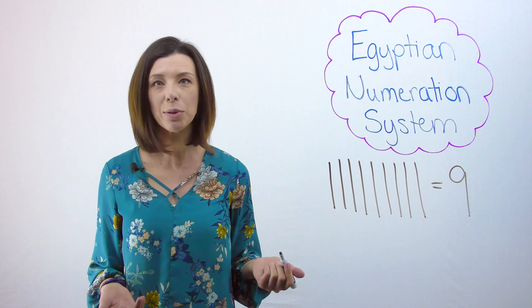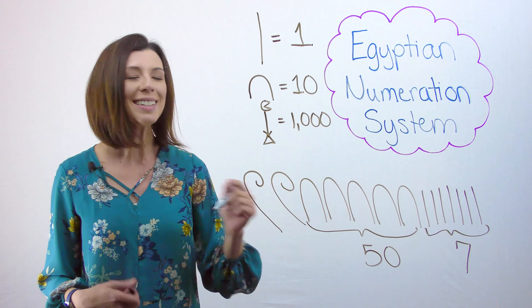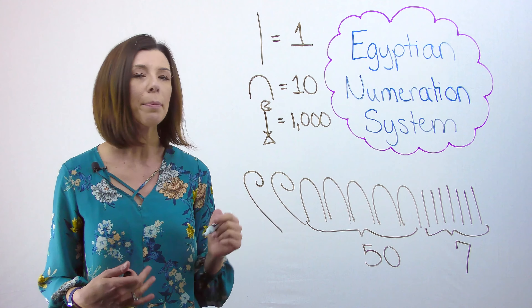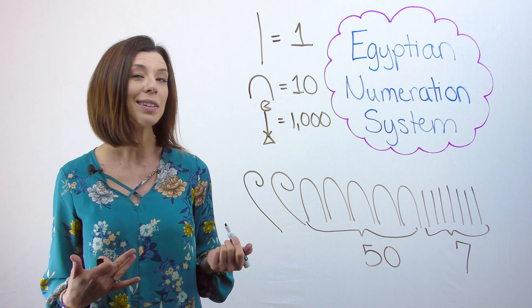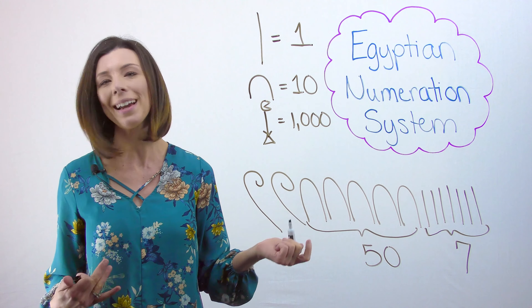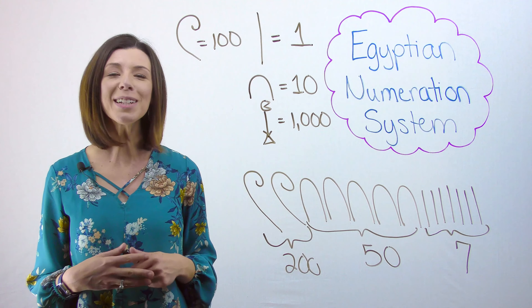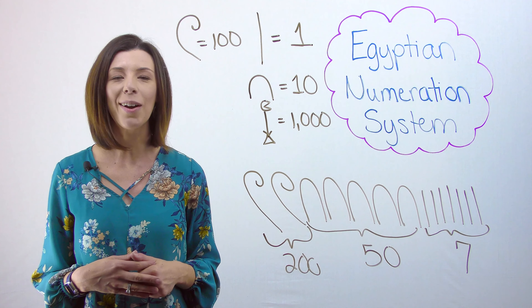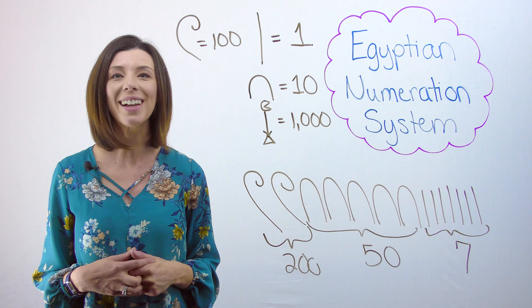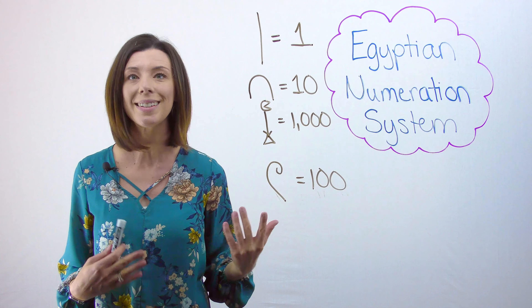Let's try one more, and then we're going to talk about what base it's in. If you know that this equals 257, think about what each symbol represents. Because I've already cracked the code a little bit, I know that my lines are 1, so I see that I've got 7 here. I know that each of these little upside-down U shapes are worth 10, which gives me 50. And these guys — I don't know what they are, but since I know that this whole number represents 257, and I'm still left with 200 to come up with, and there's two of them, I can guess that they're both worth 100. I can write that down as well.